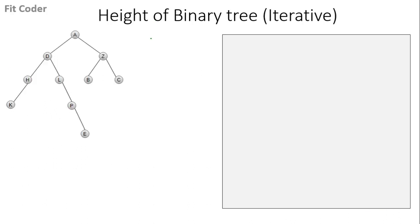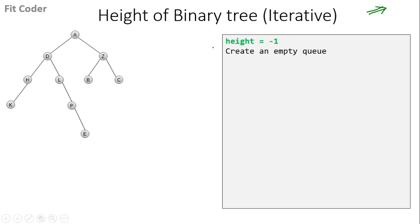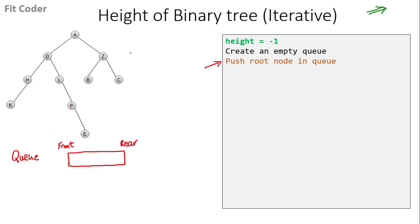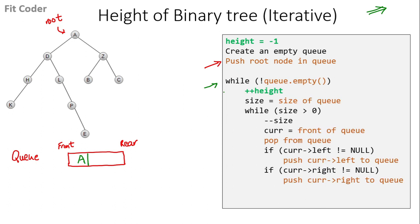The height of a binary tree can be calculated using both recursive and iterative methods. The recursive method is explained in a previous video — the link is in the description or top right corner. Here, the focus is on the iterative method. The first step is to keep a variable 'height' initialized to -1, because the height of a null tree is -1. In the second step, we create an empty queue and push the root node. In this tree, A is the root, so we push A.